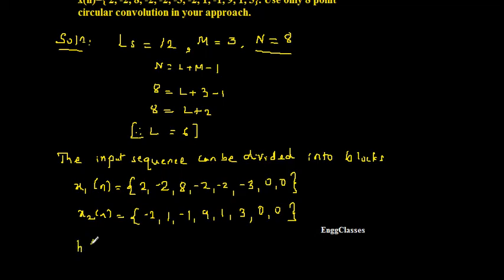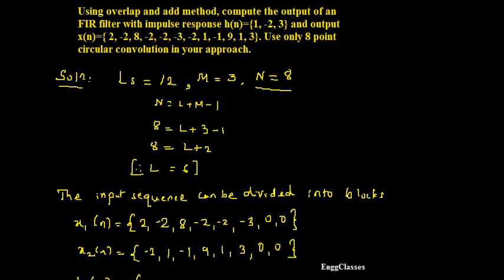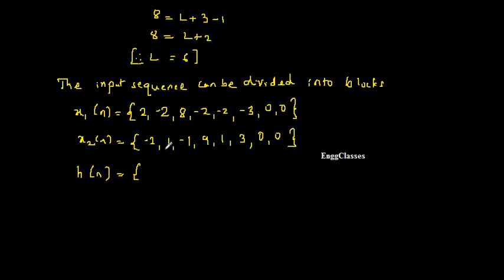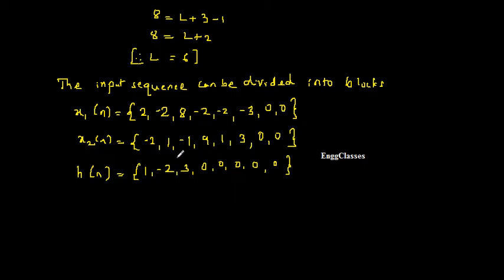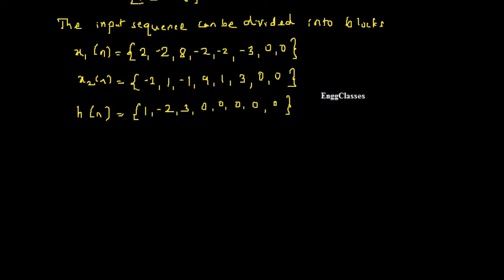Next, consider the impulse response h[n] whose samples are 1, −2, 3. To find the circular convolution, h[n] must also be of length 8, so I increase its length by appending 5 zeros, making h[n] = {1, −2, 3, 0, 0, 0, 0, 0}.